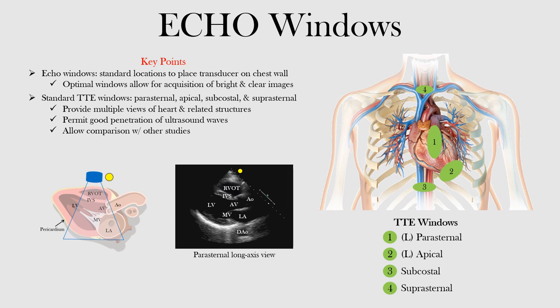Within each window there are various views. Number one is the parasternal window, located on the left side usually between the third and fourth intercostal space, on the left side of the sternum. We place the transducer there and we can get a great view of the heart along the long axis — this is called the parasternal long axis view.